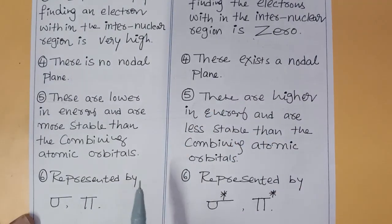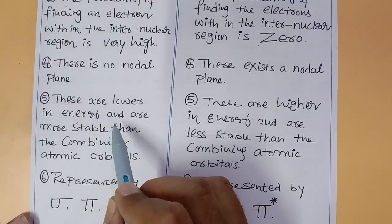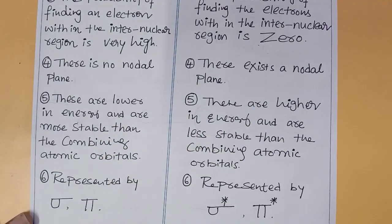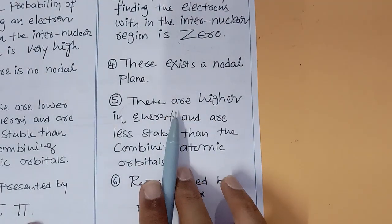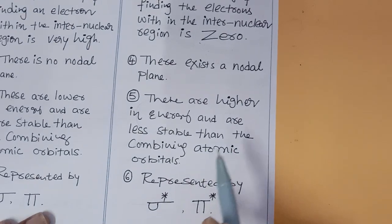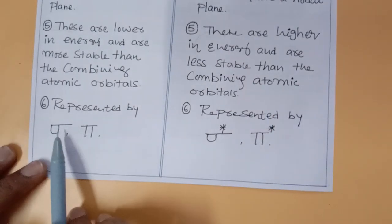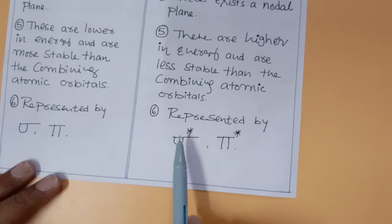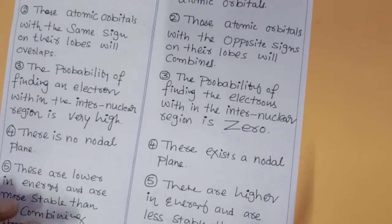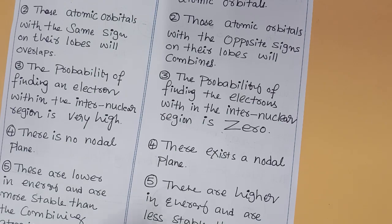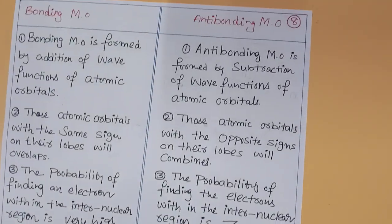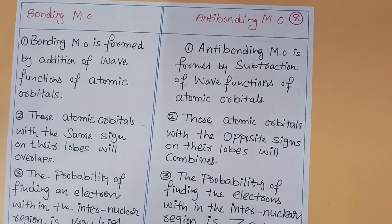This is how the bonding and anti-bonding molecular orbitals are formed by the linear combination of atomic orbitals — that is called the LCAO method. Thank you for watching. Please do subscribe, like, and share my channel. Thank you.